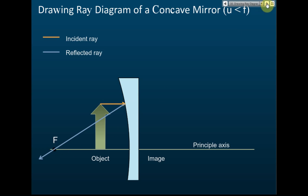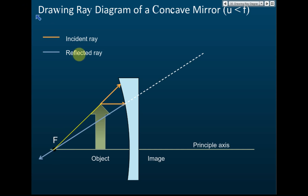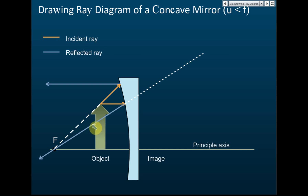We extend the line because we need to find the position of the image. Rule number two: if the light ray passes through f or comes from f, then the ray will be reflected parallel to the principal axis. These two reflected rays do not converge, so we have to extend the lines to the back of the mirror.